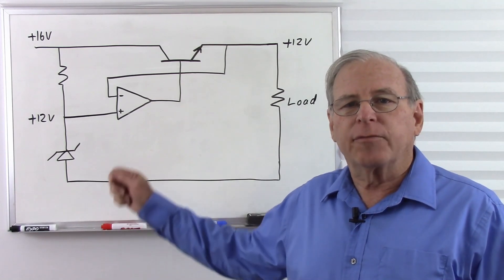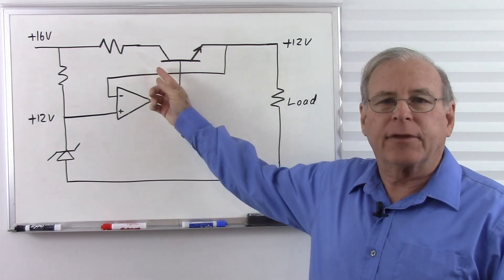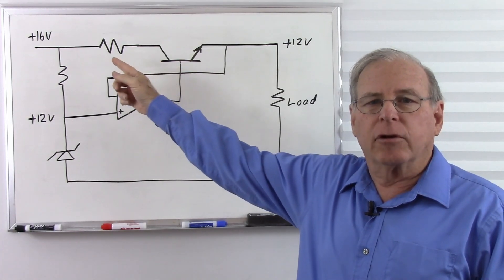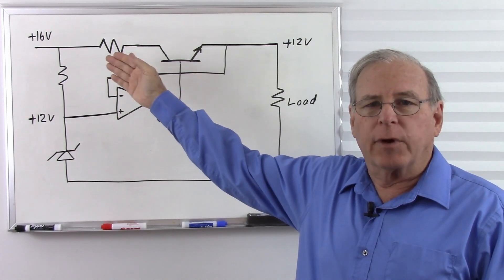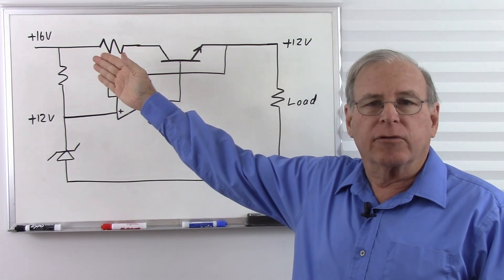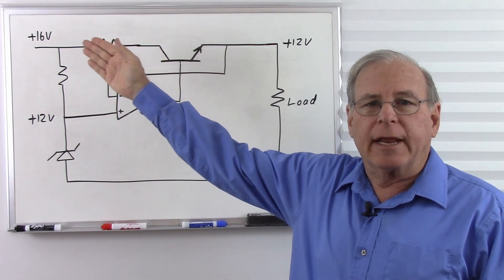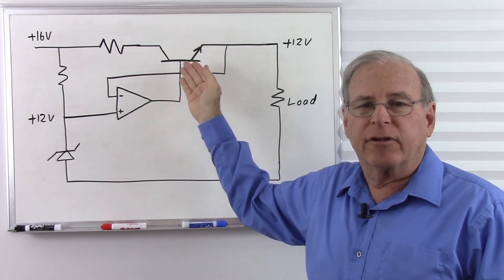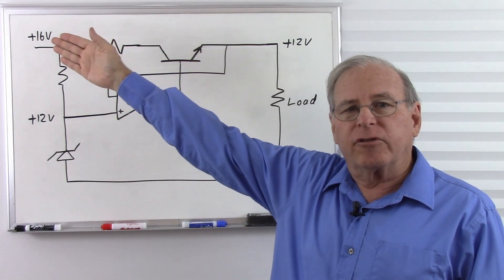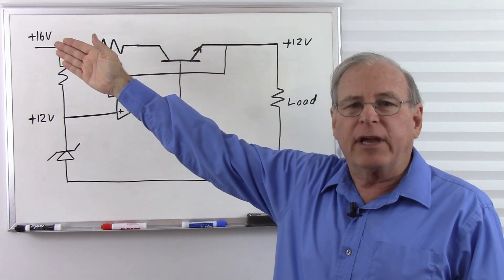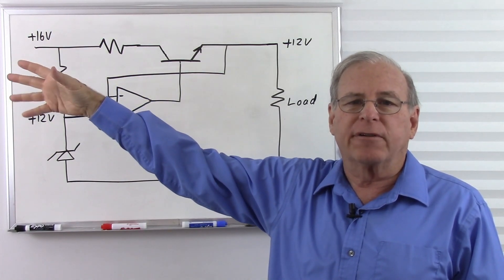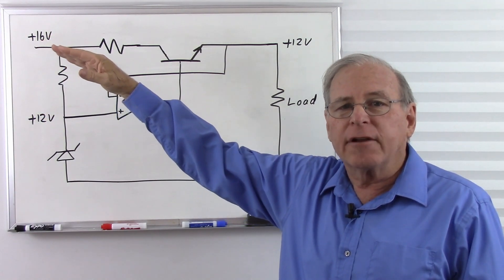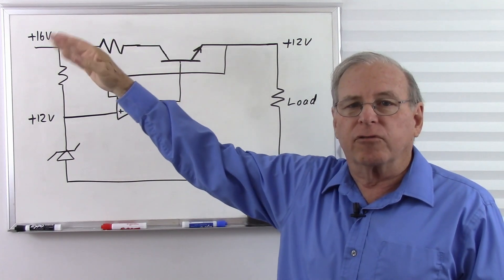There are two common approaches to current limiting in a linear power supply. The first is putting a resistor at the collector of this pass transistor. Whatever current goes through the transistor has to go through the resistor first. Whenever current goes through a resistor, we get a buildup of voltage where the current enters the resistor and a drop in voltage where the current exits. This 16 volt supply is going to be pretty steady because the impedance of the transformer, rectifier, and filter is very, very low.